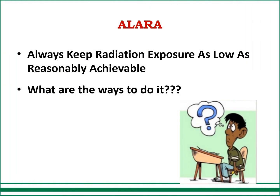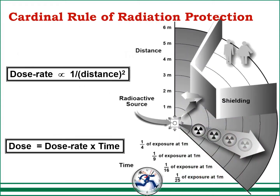ALARA: always keep radiation exposure as low as reasonably achievable. The cardinal rule of radiation protection involves three factors: time, distance, and shielding. Dose rate is inversely proportional to the square of the distance — double the distance and the dose rate becomes one-fourth. For time, dose rate is directly proportional to time, so reduce your time and manage it accordingly. Use appropriate shielding according to the type of radiation.